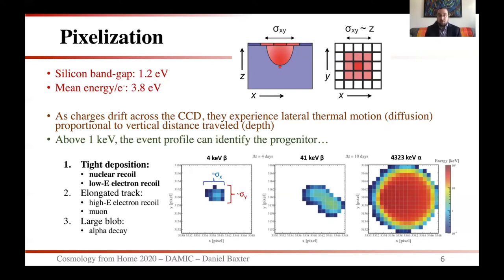For example, a tight deposition is probably either a nuclear recoil or a low energy electron recoil — in this case a 4 keV beta. In the center plot you see a slightly more elongated track, a higher energy electron recoil, in this case a 41 keV beta. You could also have a long track from a muon. On the right, a 4 MeV alpha gives a very large blob in the detector. Interestingly, these three example events all occur in the same position in the detector — we know with certainty this is a beta-beta-alpha decay chain and not a dark matter signal. This is a very unique and useful tool that CCDs can leverage to reject intrinsic backgrounds.